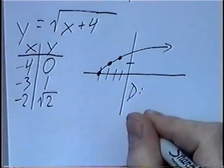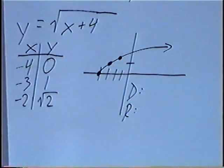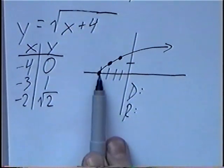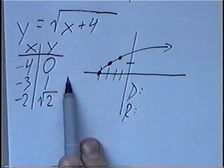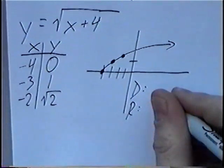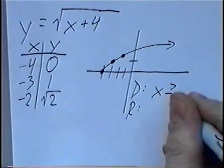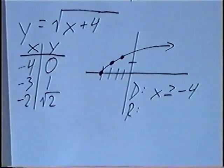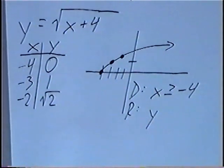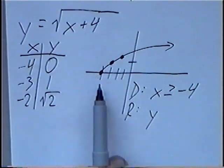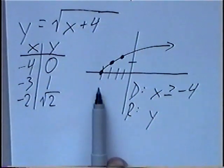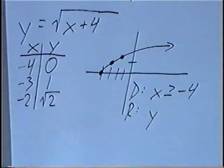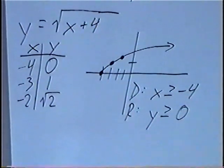For the domain and range, we look at the graph or the x and y values. The smallest x value on here would be negative 4 — anything to the left of negative 4 would give imaginary numbers, so the domain is x greater than or equal to negative 4. For the range, the smallest y value on the graph is zero, and we cannot have any negative y values, so y has to be greater than or equal to zero.